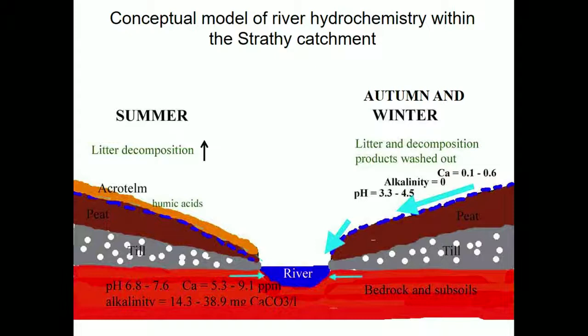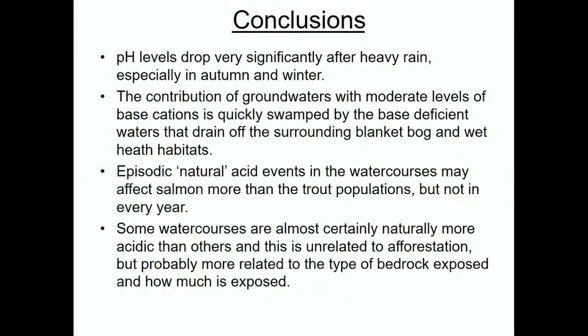Acid events are obviously occurring before salmon fry emerge from the gravels and during summer periods. In conclusion: pH levels drop very significantly after heavy rain, especially in autumn and winter. The contribution of groundwaters with moderate levels of base cations is quickly swamped by these base-deficient waters. These episodic natural events may affect salmon more than trout, though not in every year, and some watercourses are naturally more acidic than others depending on alkalinity and buffering capacity.